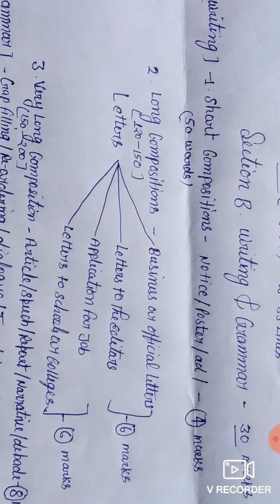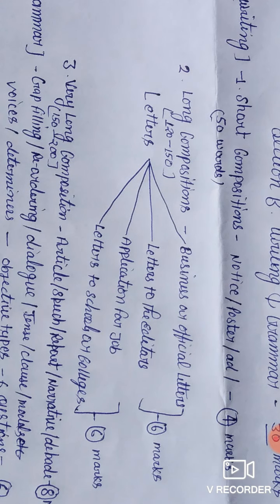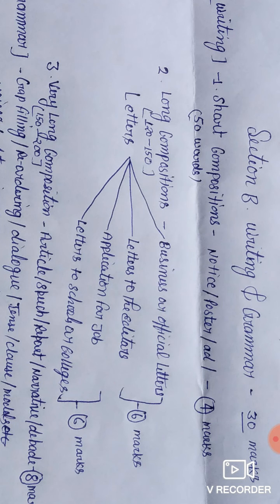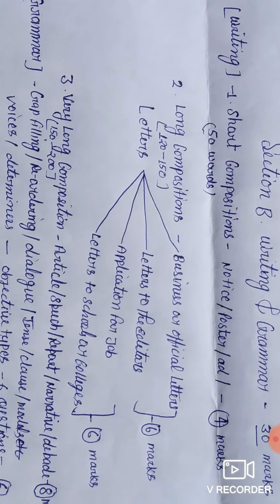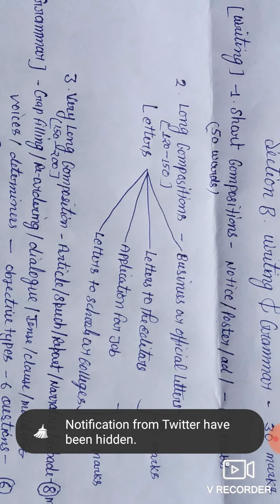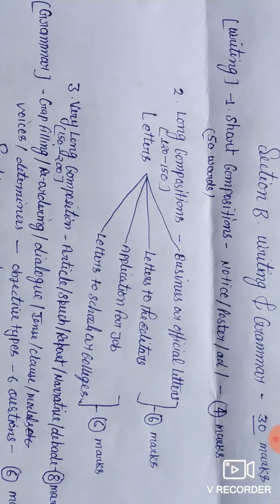Section B: Writing Comprehensive. It carries 30 marks. It has two portions, mainly two portions: writing portion and grammar portion.